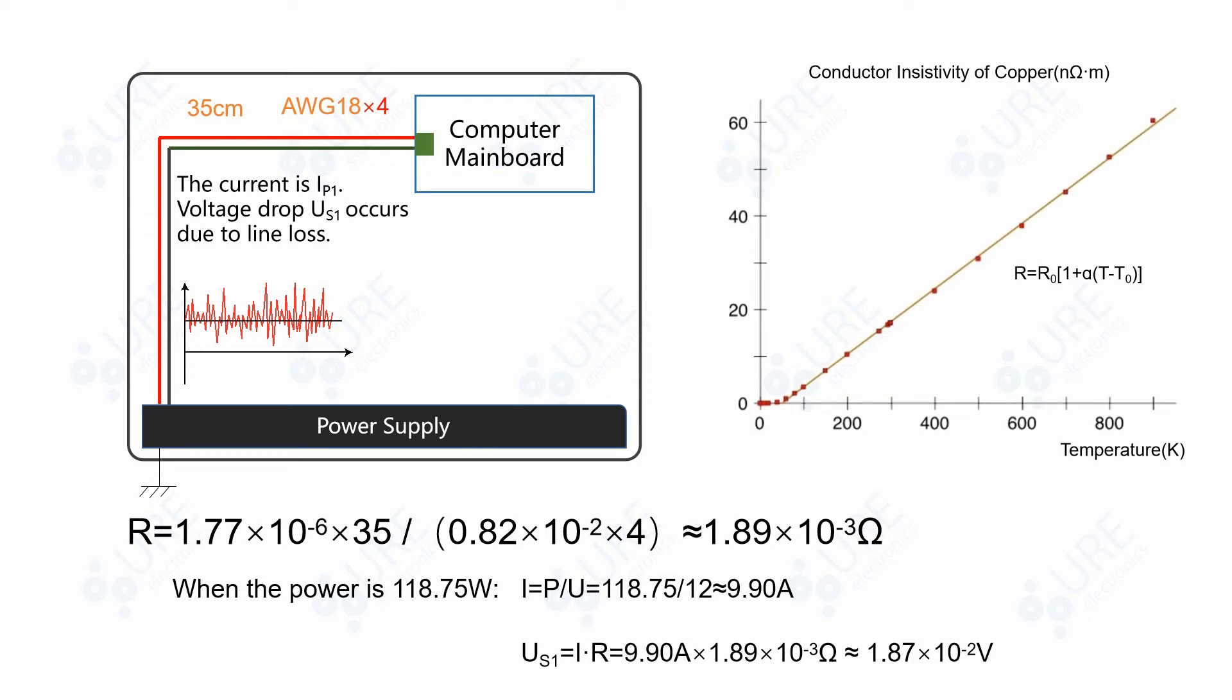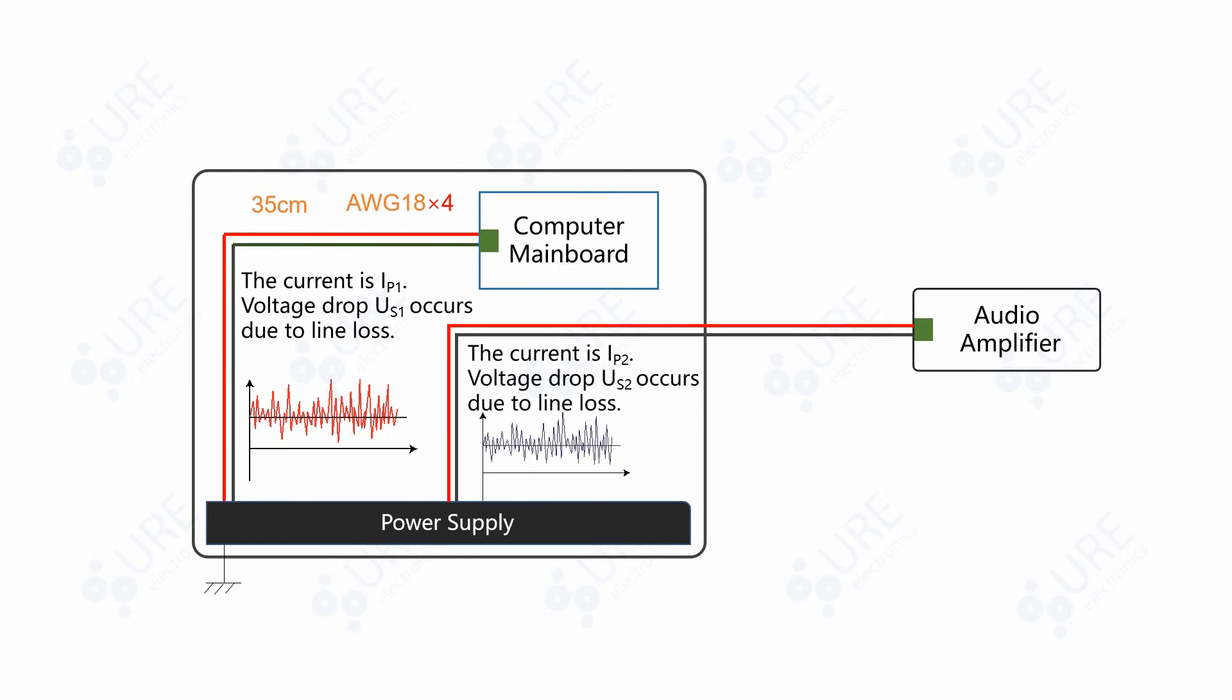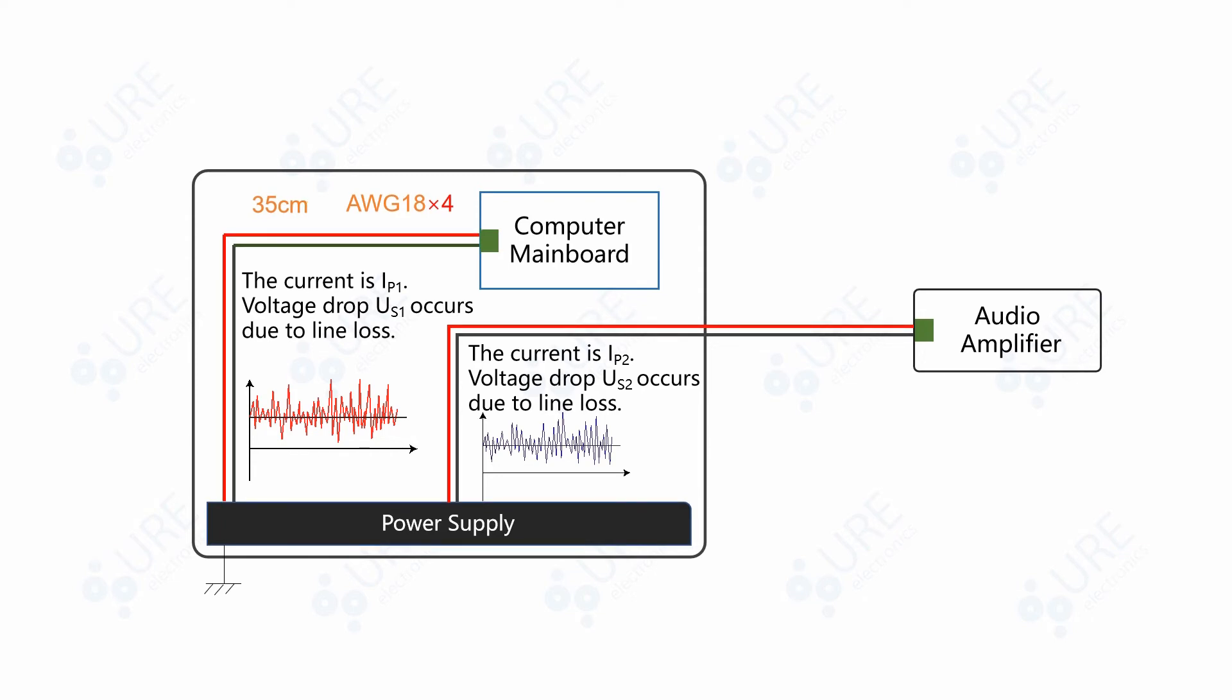To save space and cost, manufacturers would use the power supply in the host to power the audio amplifier at the same time. And there will also be voltage drop in this process and another DC signal attached with another irregular and messy AC signal. If the cable used here is thinner, its resistance will be larger. Thus, the voltage drop will change more sharply and the AC interference attached will be more.